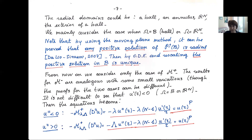So the Pucci plus operator depends only on the sign of the second derivative, which is the remaining eigenvalue. When U double prime is negative, the equation reduces to small lambda times the Laplacian in radial coordinates equal to U^p. But when U double prime is positive, there is an asymmetry between the two coefficients for the first and second derivatives, so it is no longer the Laplacian equation.